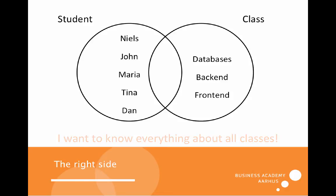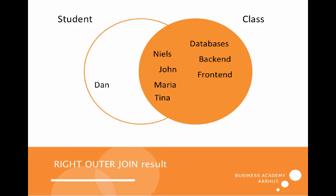Now let's look at the right side, because I want to know everything about all classes — specifically whether there are any students in a class. On the right side we have databases, backend, and frontend. The frontend is kind of outside because there are no students enrolled in it. In the middle we have Nils, John, Maria, and Tina, because they are enrolled in databases and backend.